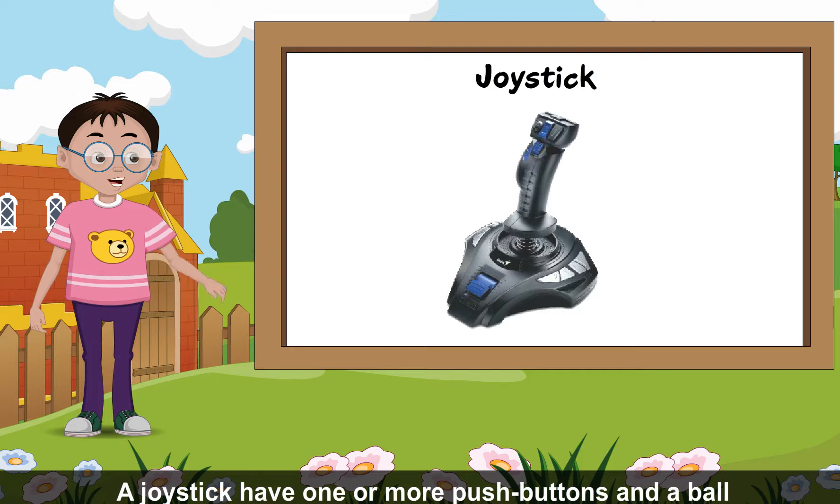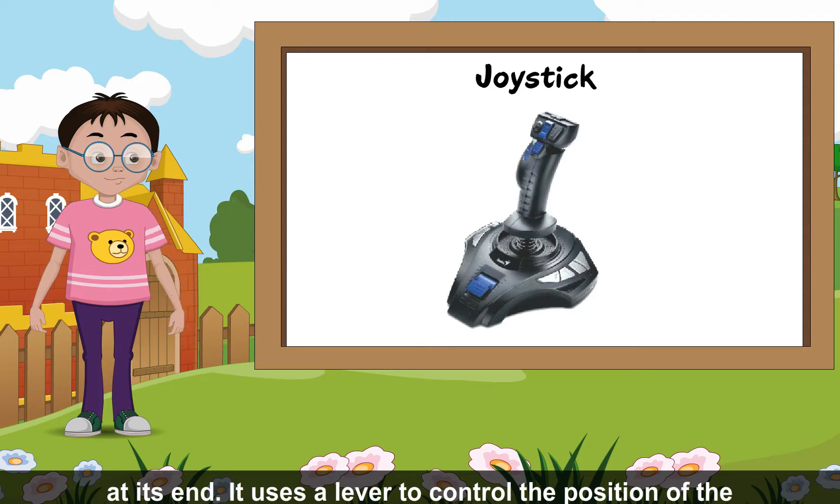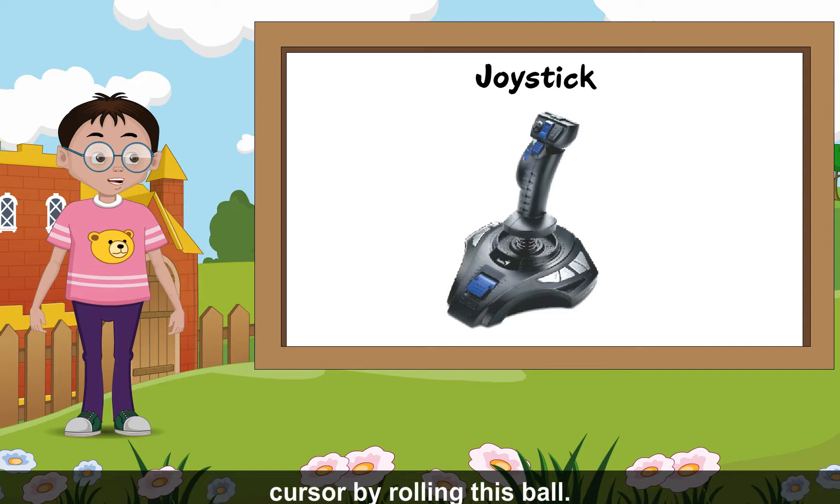A joystick has one or more push buttons and a ball at its end. It uses a lever to control the position of the cursor by rolling this ball.